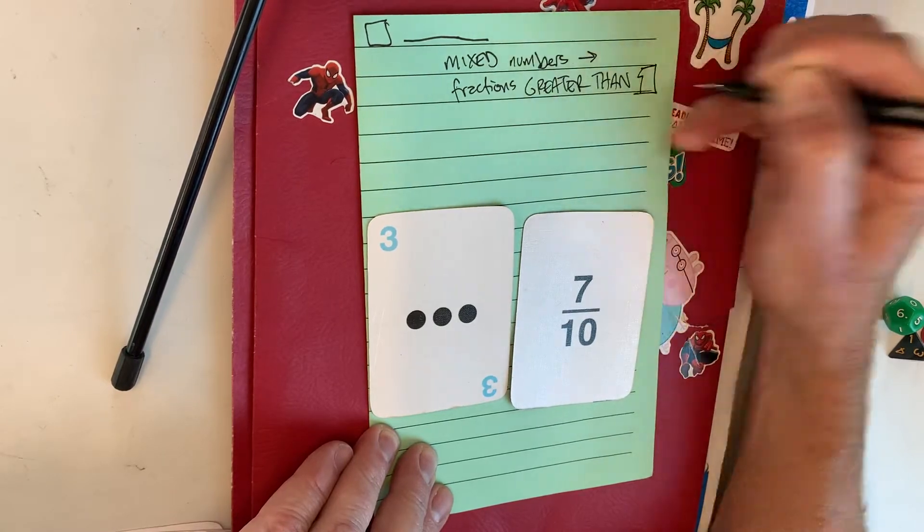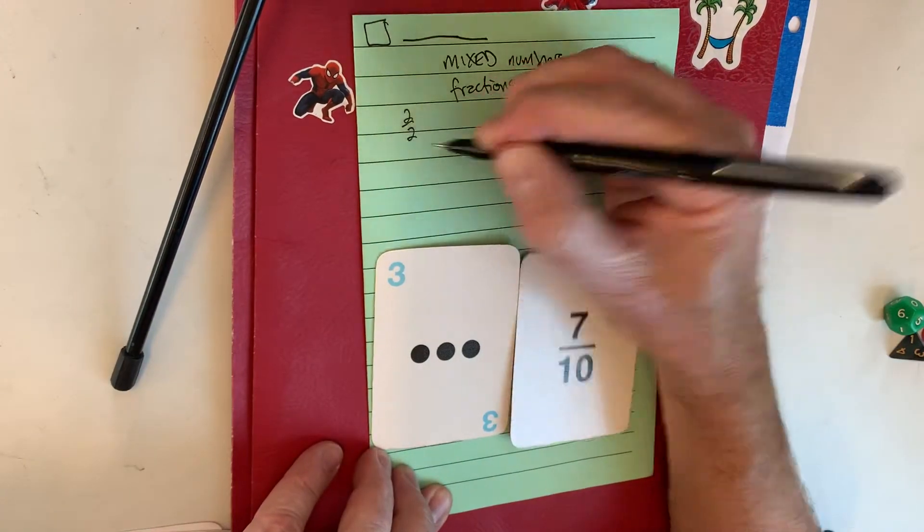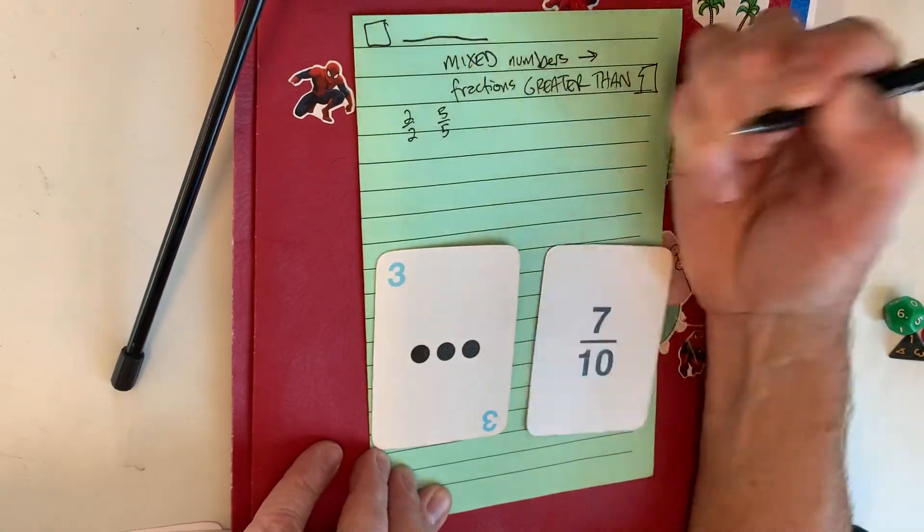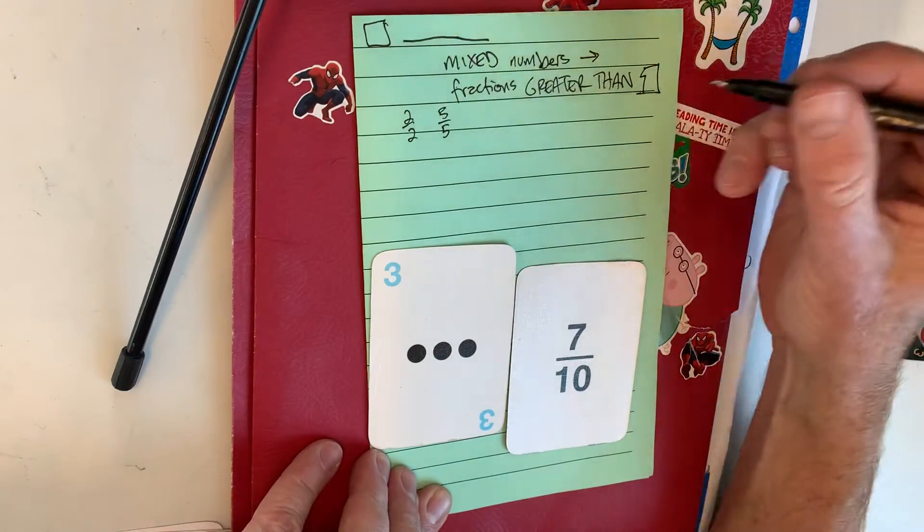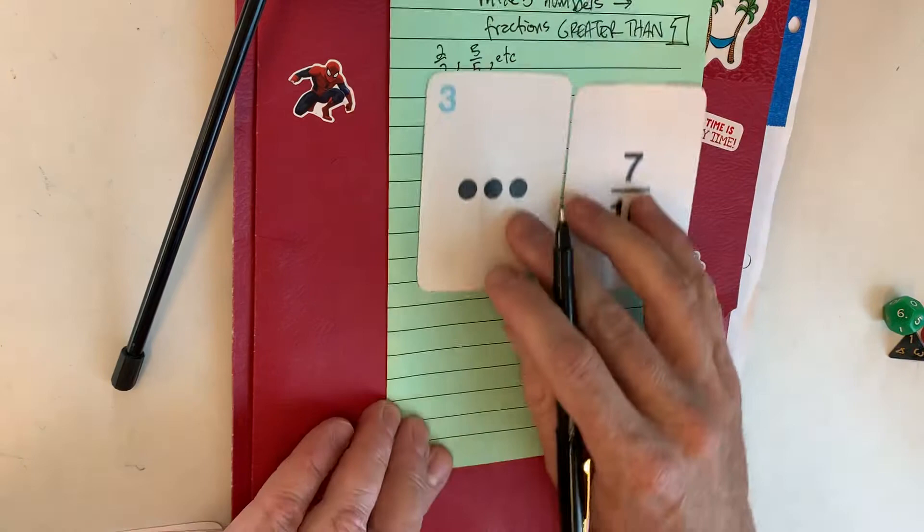And of course you all, I hope, know that one would be two out of two or five out of five, so a fraction greater than one would be... well, let's do a sample.